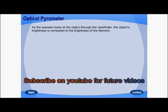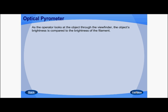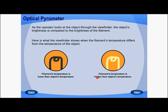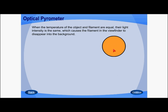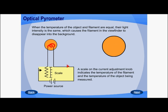As an operator, we have to look through the viewfinder and compare the brightness of the filament and the object. If the filament temperature is lower than the object temperature, we can clearly see the filament, which will be darker in color. If the filament temperature is higher than the object temperature, the filament color will be brighter than the object. We have to adjust the filament so that its color matches the object color, causing the filament to disappear into the background in the viewfinder.